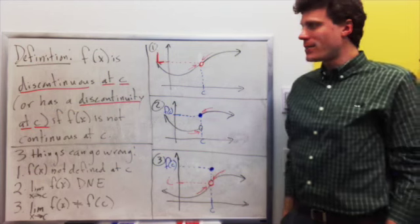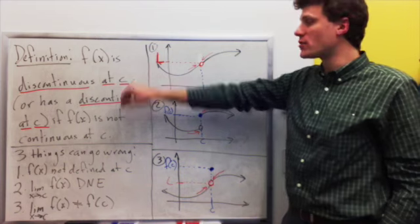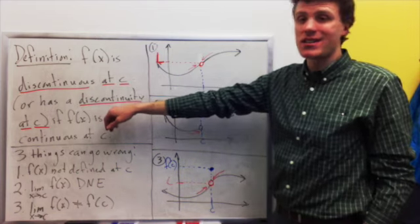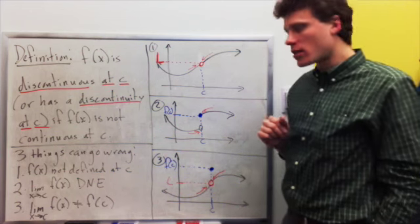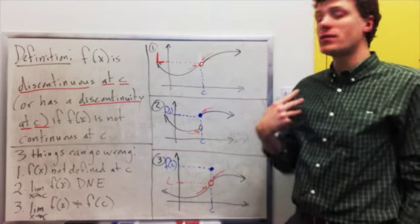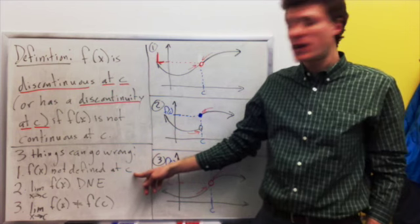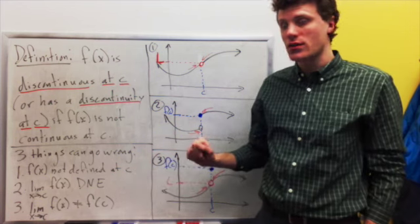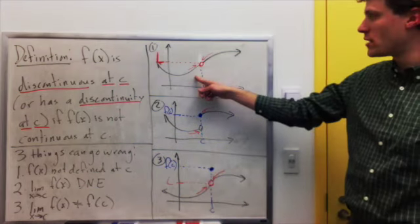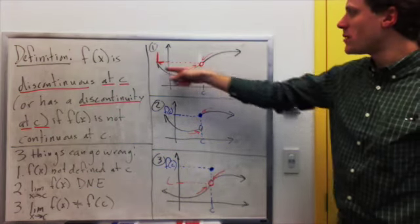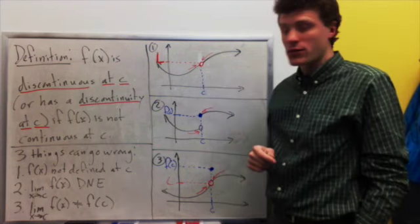Now, if f is not continuous at c, then we say that f is discontinuous at c, or that there is a discontinuity at c. There are three things that can go wrong according to the definition. First, continuity requires that f of x be defined at c, so the first thing that can go wrong is that f of x might not be defined at c. That's what we see in this picture: I've drawn it so that the limit as we approach c does exist, but there simply is no value of f of c.